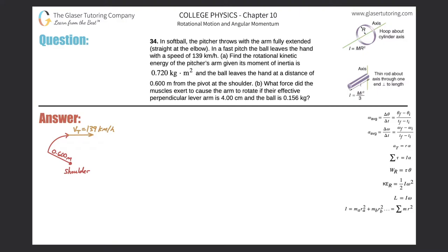Problem 34 in softball: the pitcher throws with the arm fully extended straight at the elbow in a fast pitch. The ball leaves the hand at 139 kilometers per hour. Part A: find the rotational kinetic energy of the pitcher's arm given its moment of inertia is 0.72 kilogram meter squared, and the ball leaves the hand at a distance of 0.6 meters from the pivot at the shoulder. The arm is represented by this line, 0.6 meters in length, rotating about the axis of the shoulder.